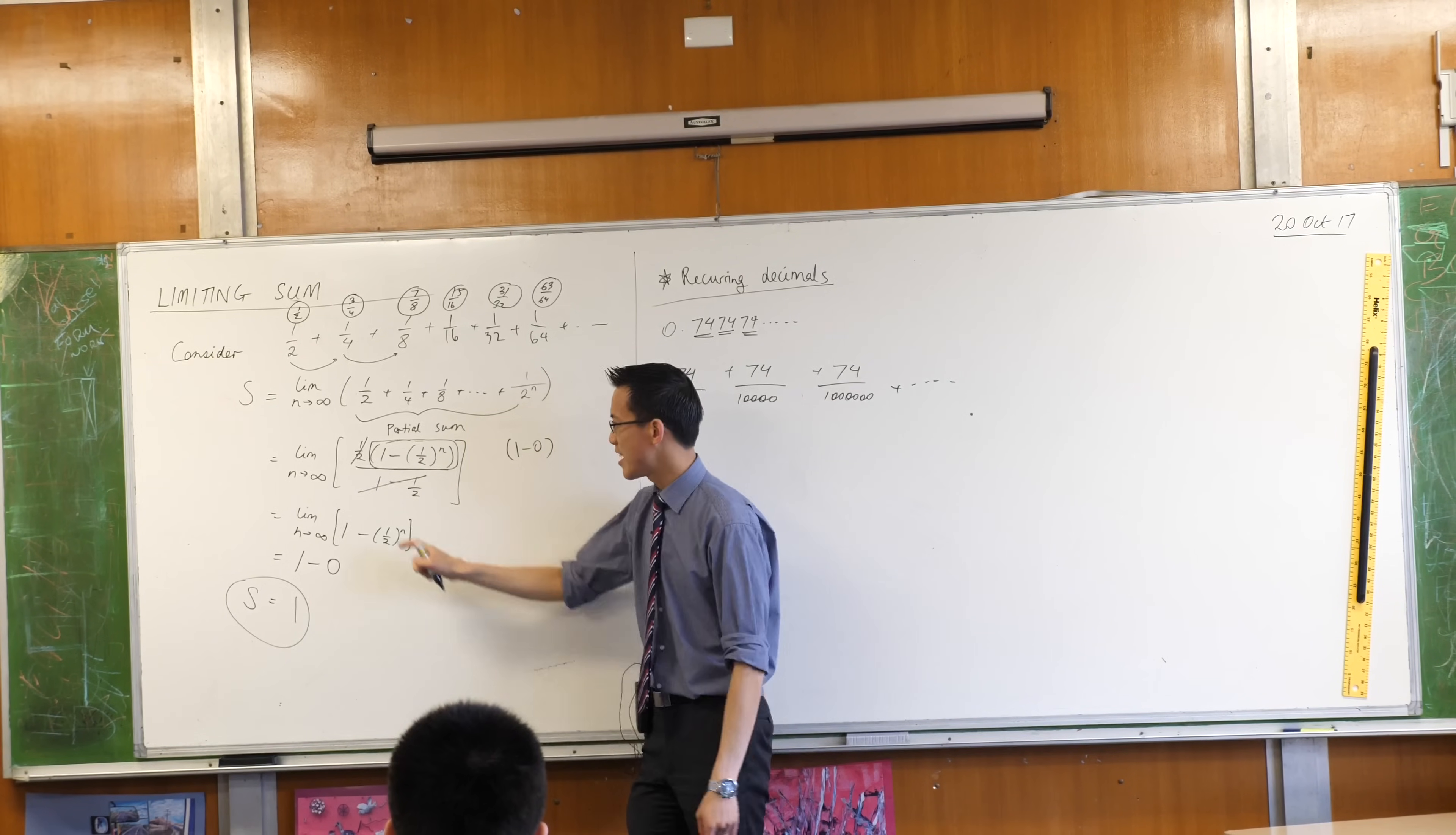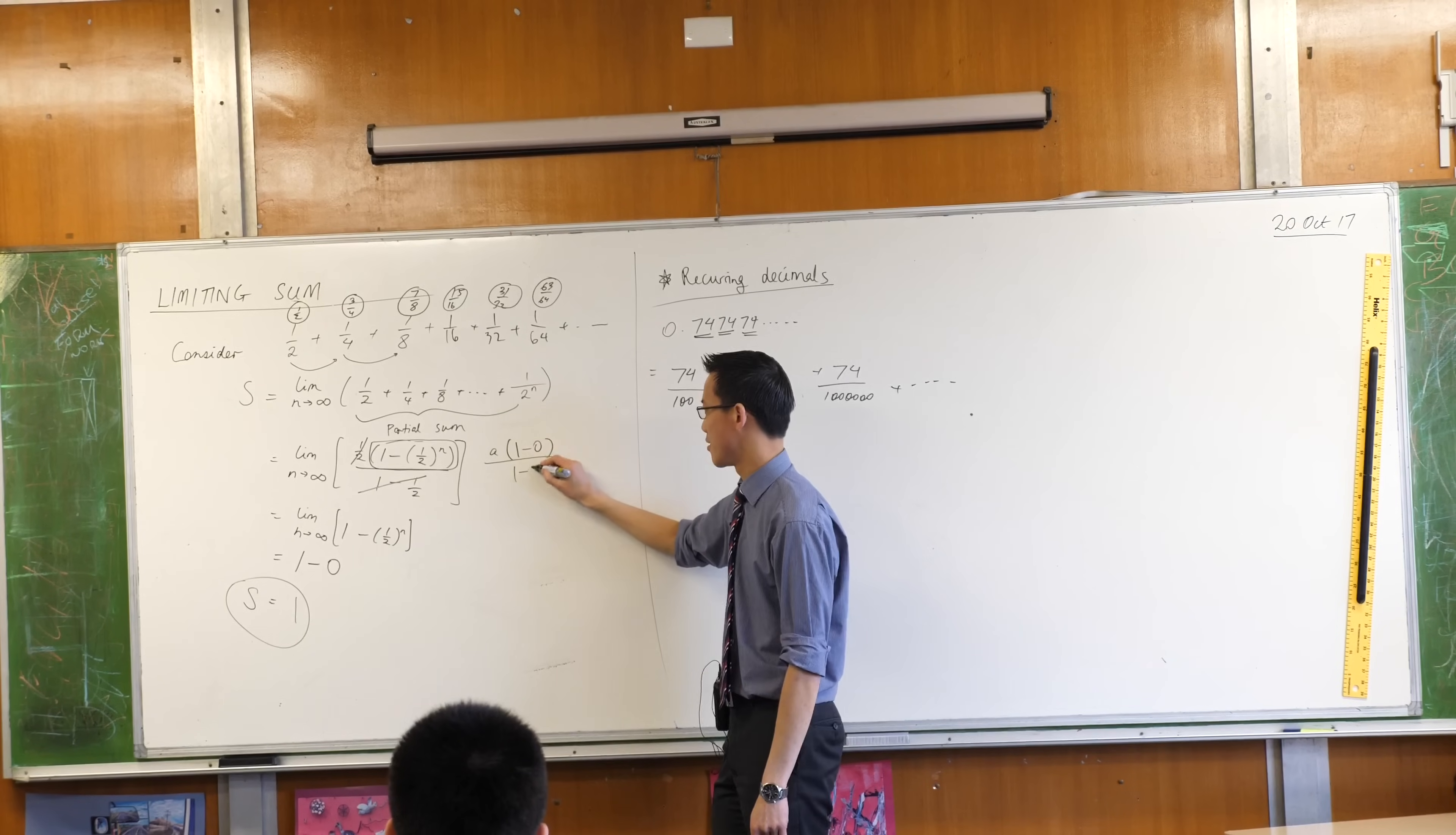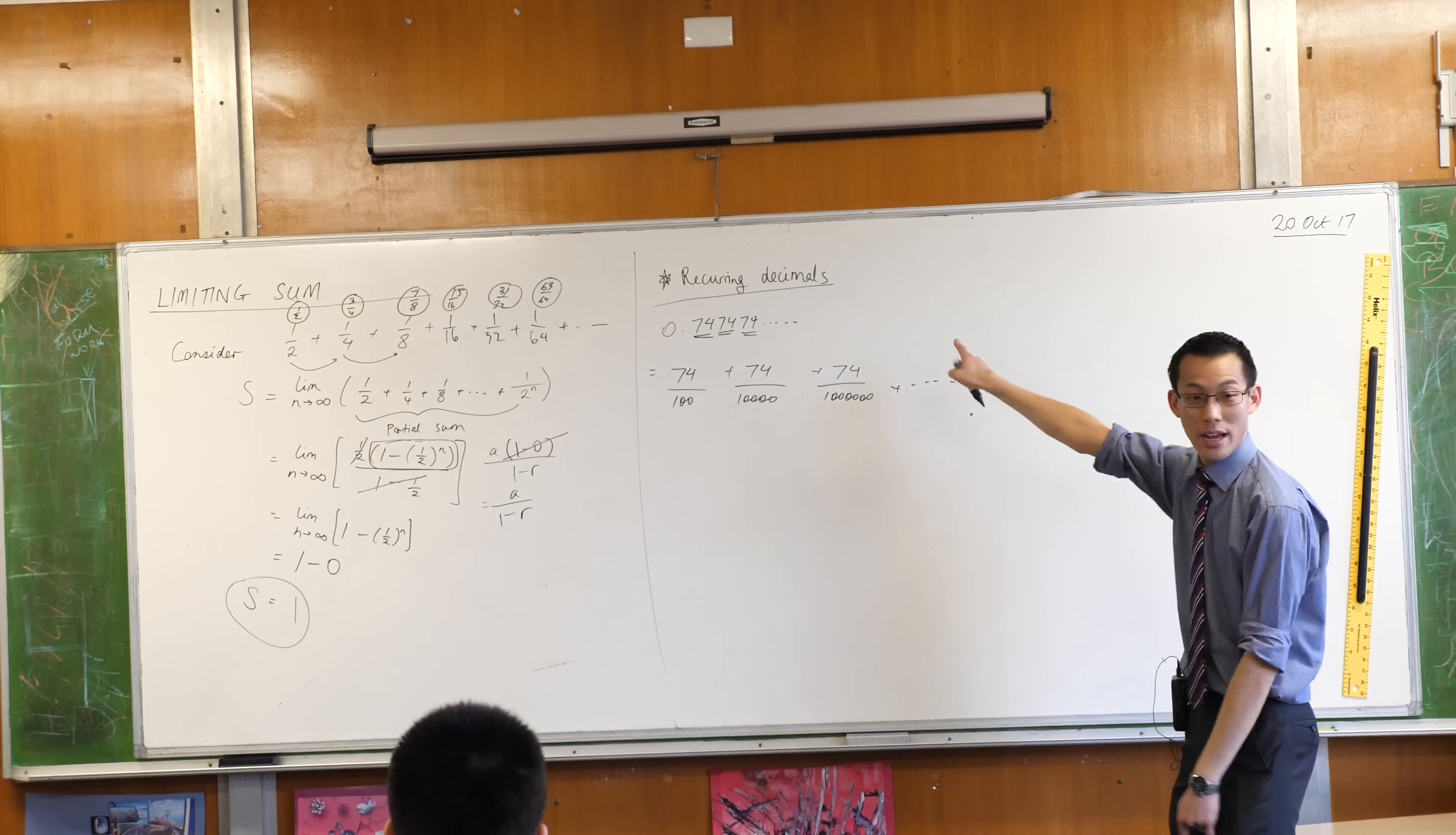Okay? So therefore, instead of a outside of 1 minus r to the n on 1 minus r, you get a times 1 over 1 minus r. But that's just nothing, right? So this is a over 1 minus r. If there's a limiting sum. So have a look at what happens.